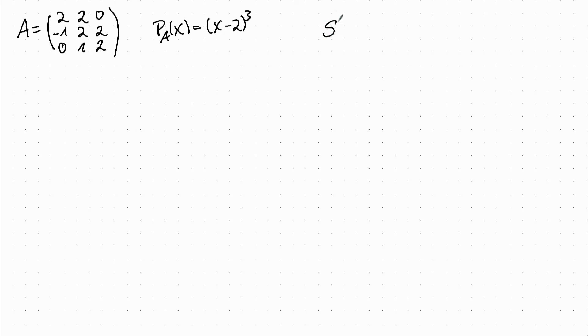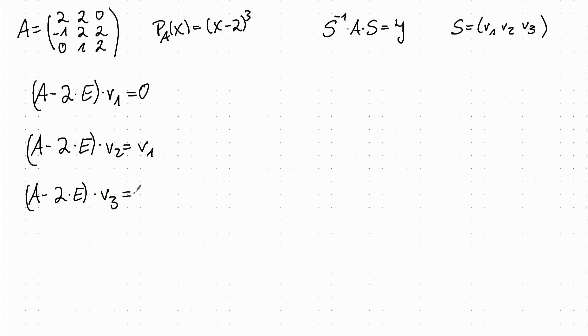So we want to find a matrix S such that S to the minus 1 times A times S is in Jordan normal form. And we call the columns of S V1, V2, V3. So our conditions are: (A minus 2E) times V1 equals 0, this means that V1 is an eigenvector. Then (A minus 2E) times V2 equals V1. And (A minus 2E) times V3 has to be equal to V2.